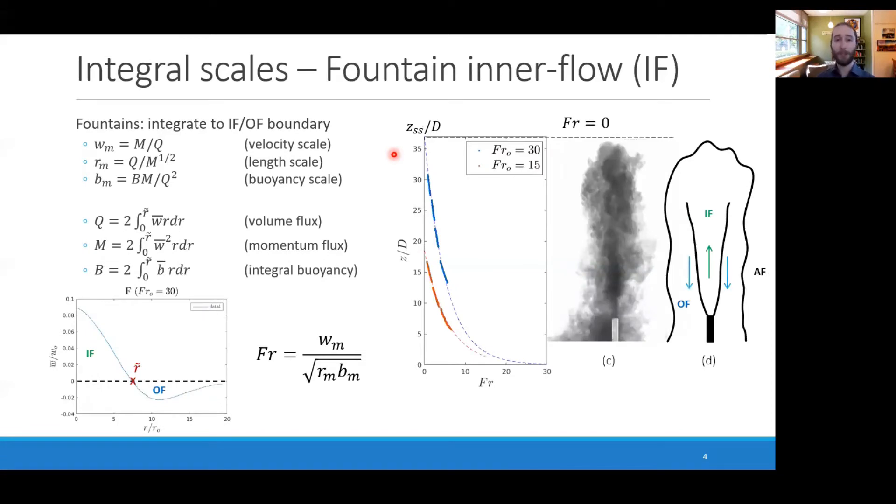Now, the inner flow of a fountain, you can do a similar thing. Instead of defining some integral quantities from zero to infinity, we can define it to the boundary that separates the inner flow and the outer flow. That is, the point where the velocity first equals zero. You can generate your new velocity length and buoyancy scales, but they correspond to the inner flow only.